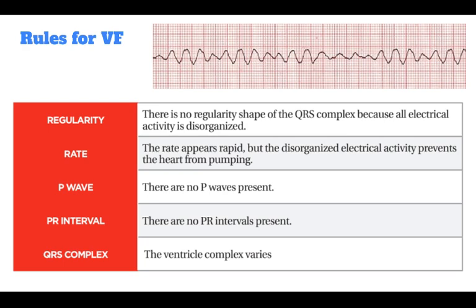Rules for VF are as follows. For regularity, there is no regularity or shape of the QRS complex because all electrical activity is disorganized. The rate appears rapid, but the disorganized electrical activity prevents the heart from pumping. There are no P waves, no PR intervals present, and the ventricular complex varies.